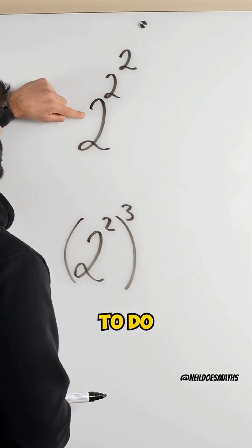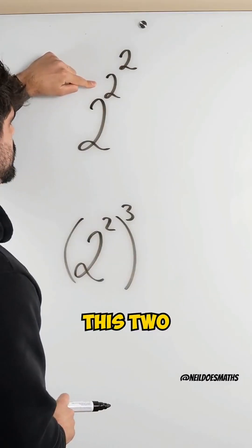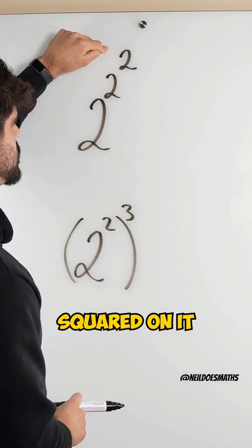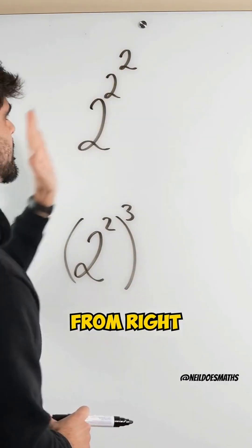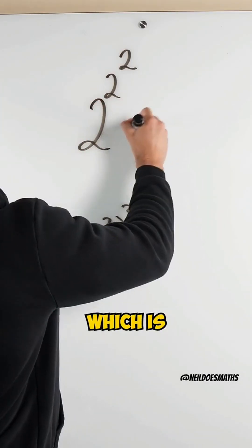Now in order to do two squared, I can't do that because this two already has a squared on it. So we're working from right to left in this case. So I need to do two squared first, which is four.